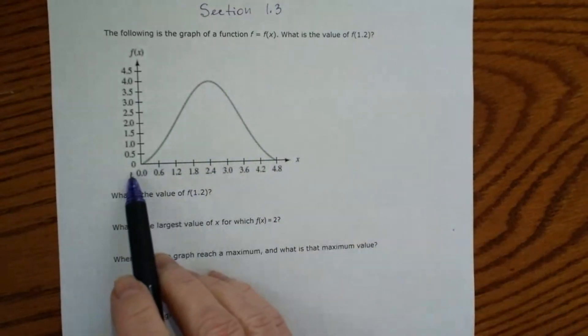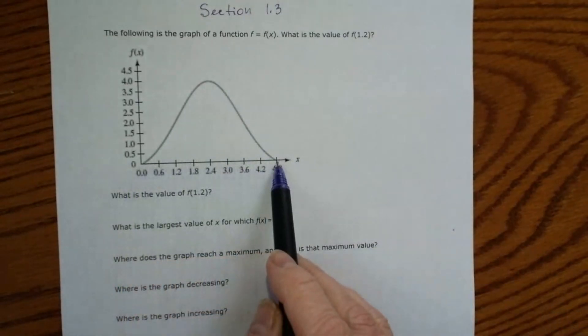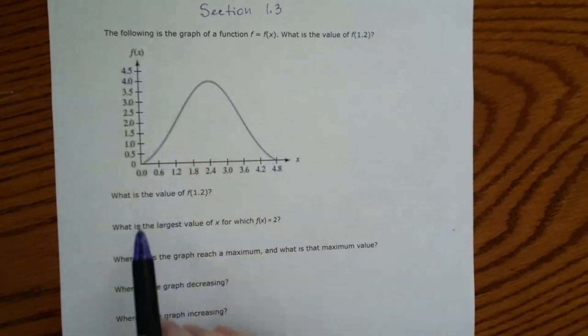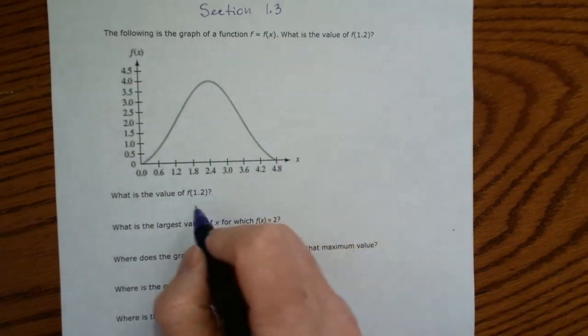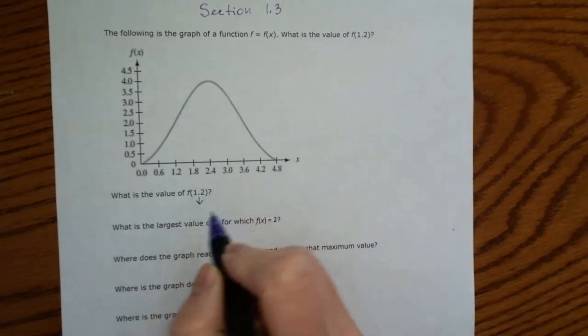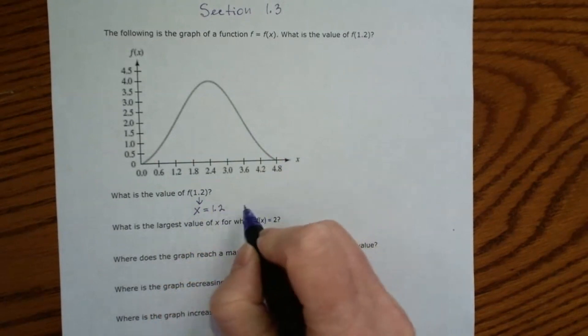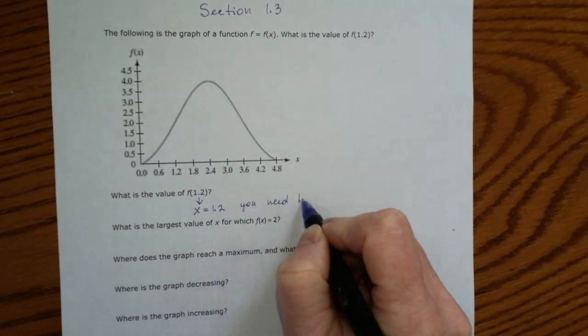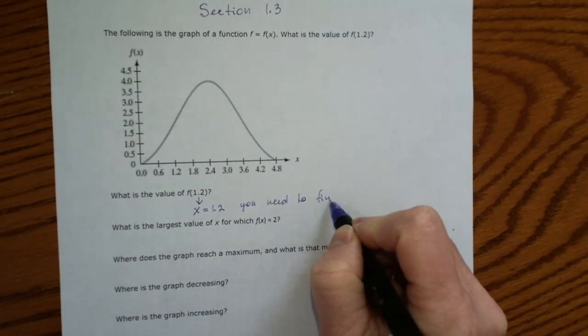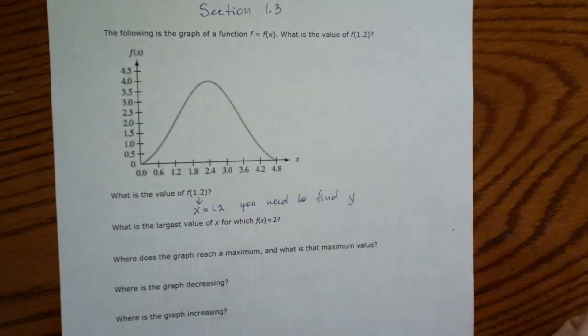So we have a graph of the function f of x. The first question is, what is the value of f of 1.2? f of 1.2 means that x is equal to 1.2 and you need to find the y-coordinate.